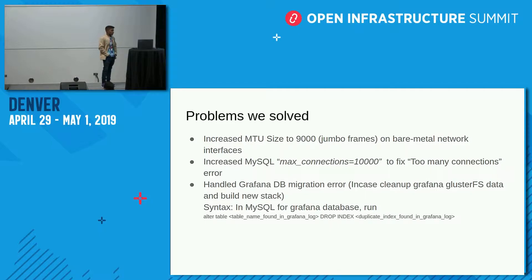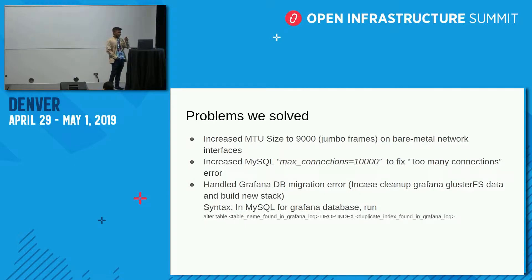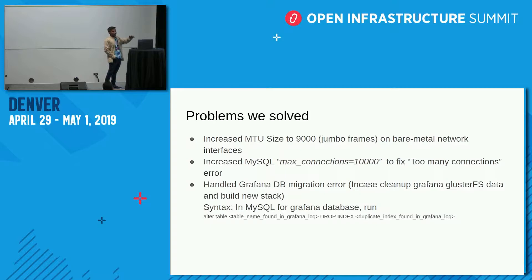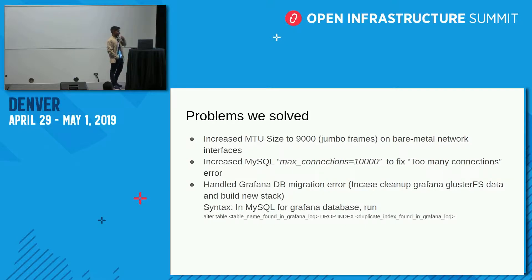The third issue was specific to our setup with GlusterFS. If you clean up GlusterFS data while the storage still exists on Monasca-hosted nodes, when you spin up a new Grafana instance you encounter a Grafana DB migration error. The workaround is to log into MySQL, select the Grafana database, and alter the table by removing the duplicate entry.